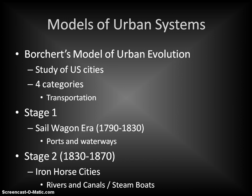The first stage is called the Sail Wagon Era, covering 1790 to 1830. These are the very early American cities established primarily around ports and waterways — coastal towns and some slightly inland cities. Cities were based primarily upon coastal trade, with goods coming over from Europe. Our initial established U.S. cities fit this pattern: Boston, Philadelphia, New York, Savannah, and Charleston. These cities are important because the main mode of transportation for moving economic goods was boats, either through the ocean or along rivers.